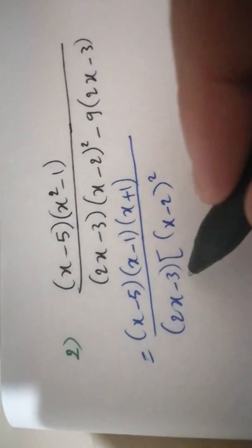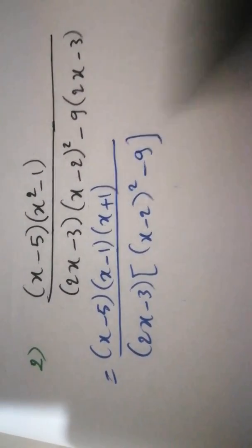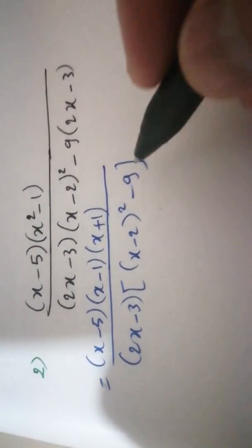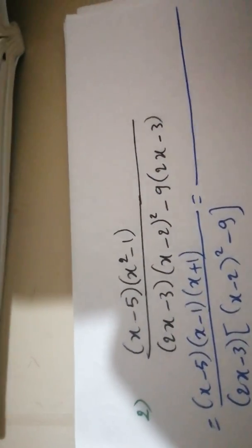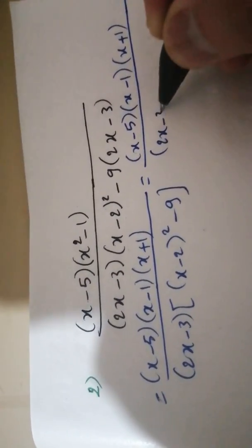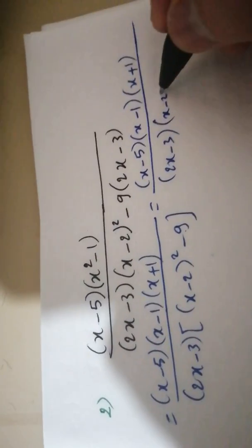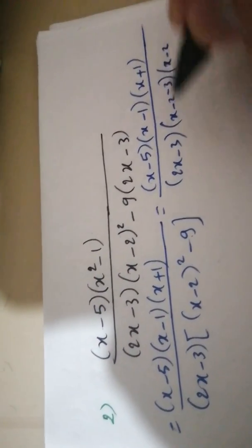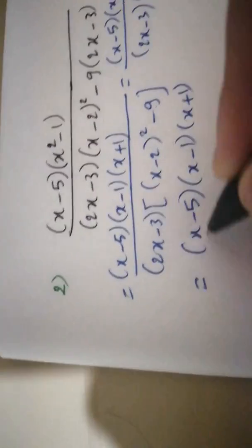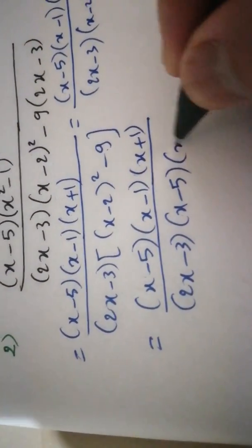Minus 9: (2x minus 3) divided by (2x minus 3) gives minus 9. Now we can factorize because it is (x minus 2) squared minus 3 squared — a difference of two squares — which becomes (a minus b)(a plus b). Here a is (x minus 2), so the factors are (x minus 5) and (x plus 1). So the denominator becomes (2x minus 3)(x minus 5)(x plus 1).